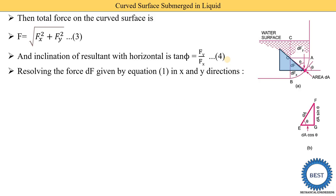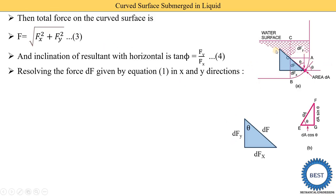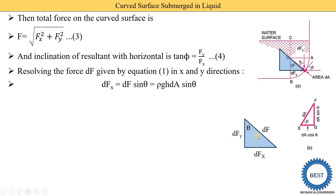Now we resolve force DF from equation 1 into x and y directions. We draw a triangle where DF is the hypotenuse and angle θ is given. To find DFx, we apply the sine equation: sin θ = opposite/hypotenuse = DFx/DF, so DFx = DF·sin θ. Substituting DF = ρGH·DA, we get DFx = ρGH·DA·sin θ.